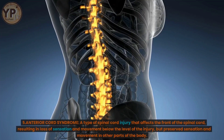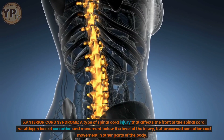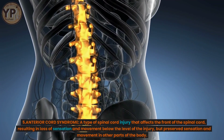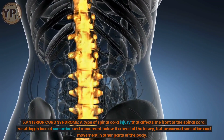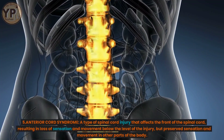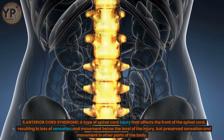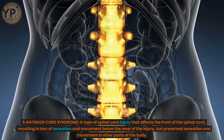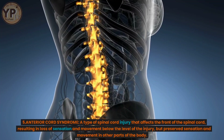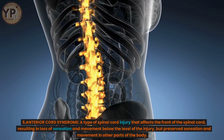5. Anterior Cord Syndrome — a type of spinal cord injury that affects the front of the spinal cord, resulting in loss of sensation and movement below the level of the injury, but preserved sensation and movement in other parts of the body.